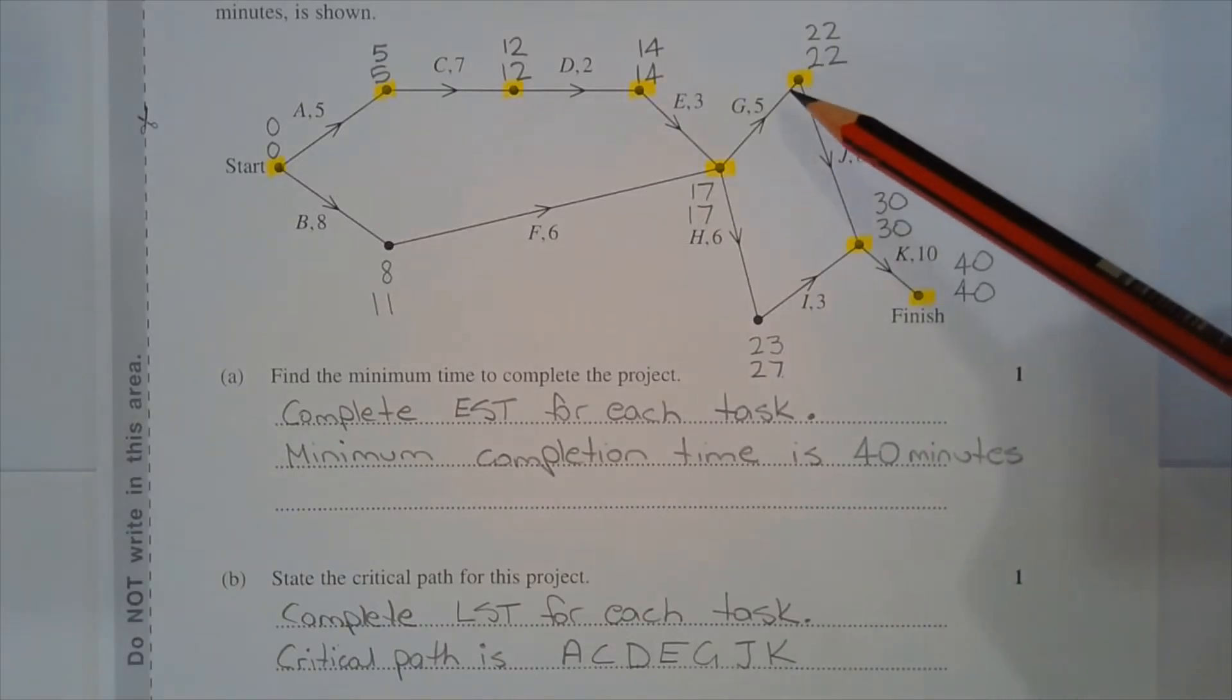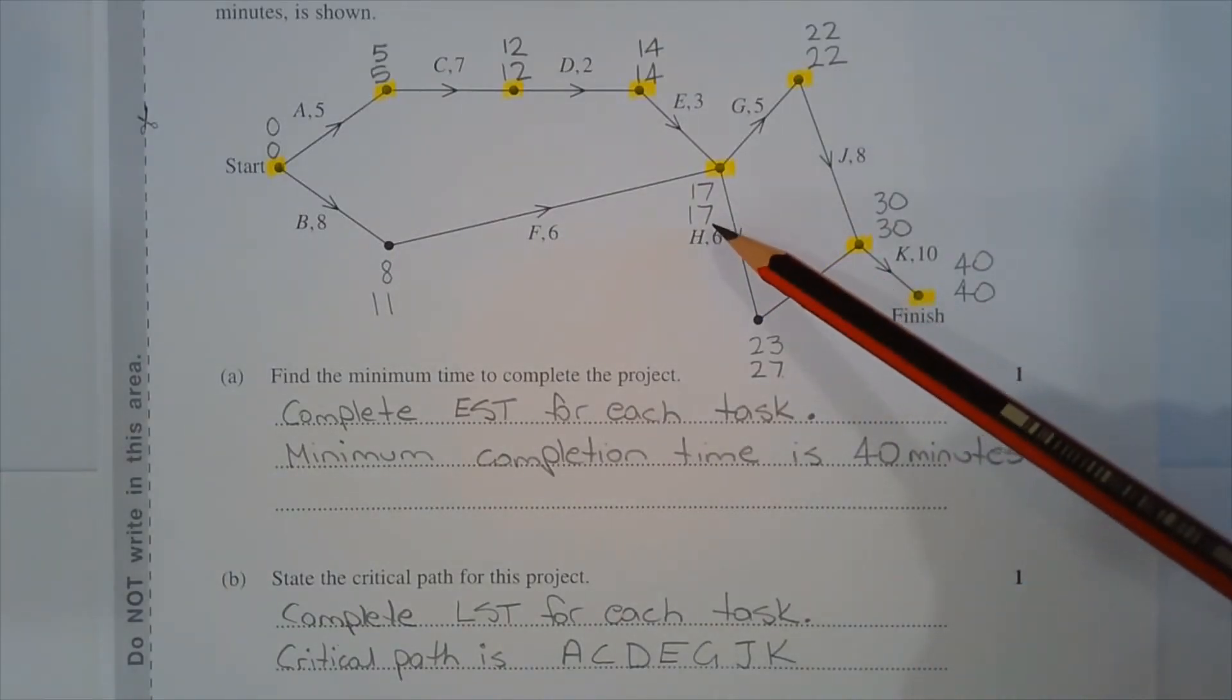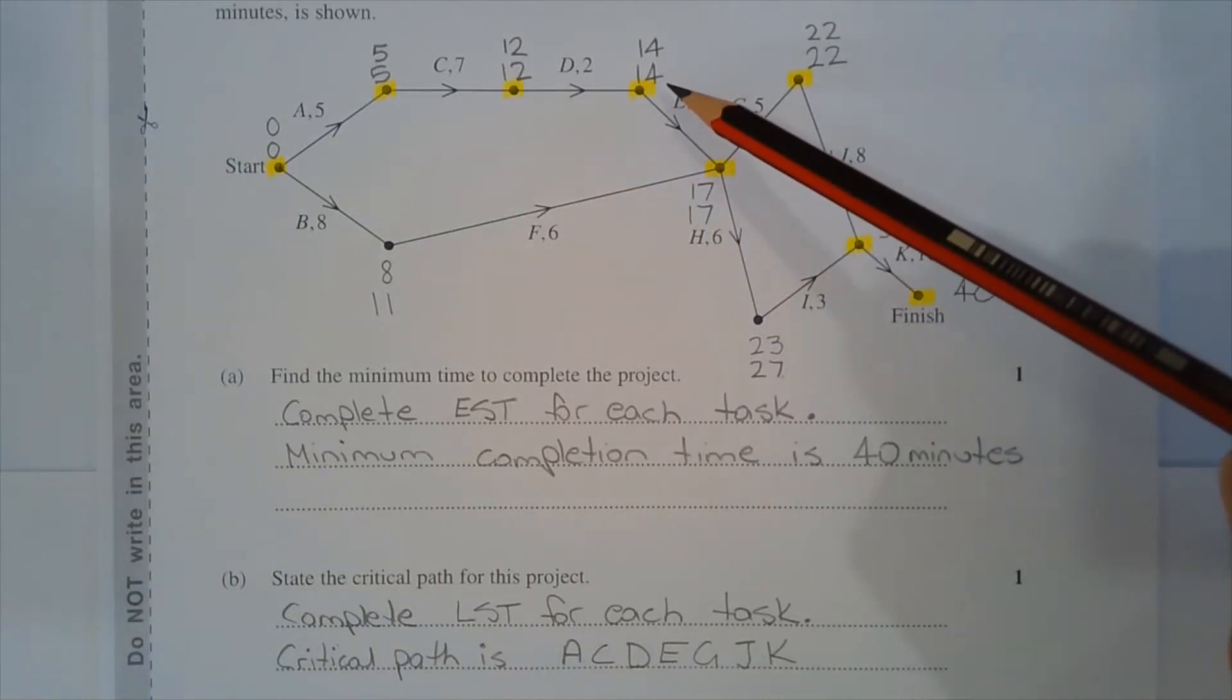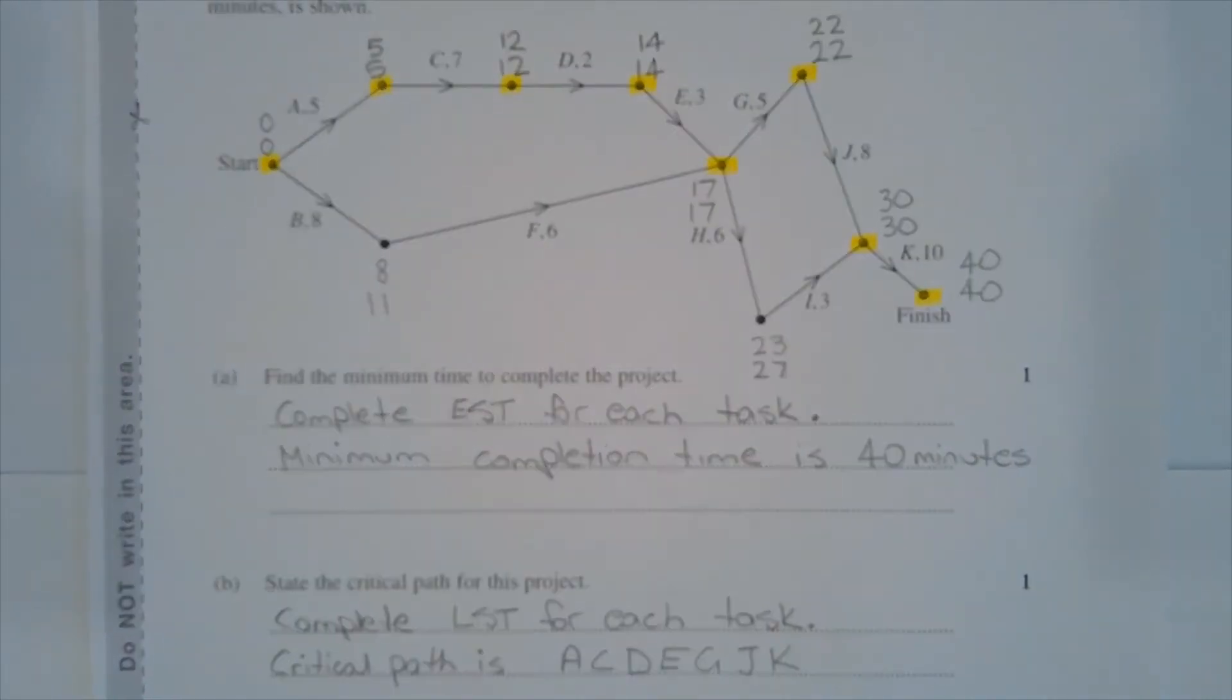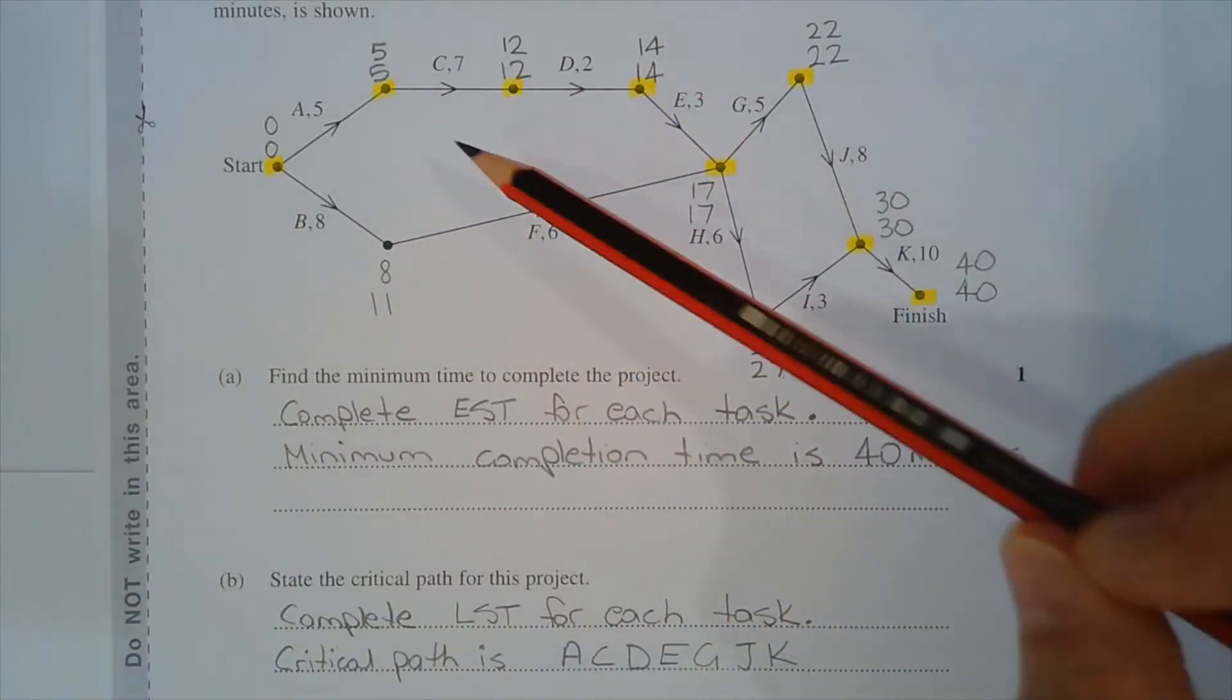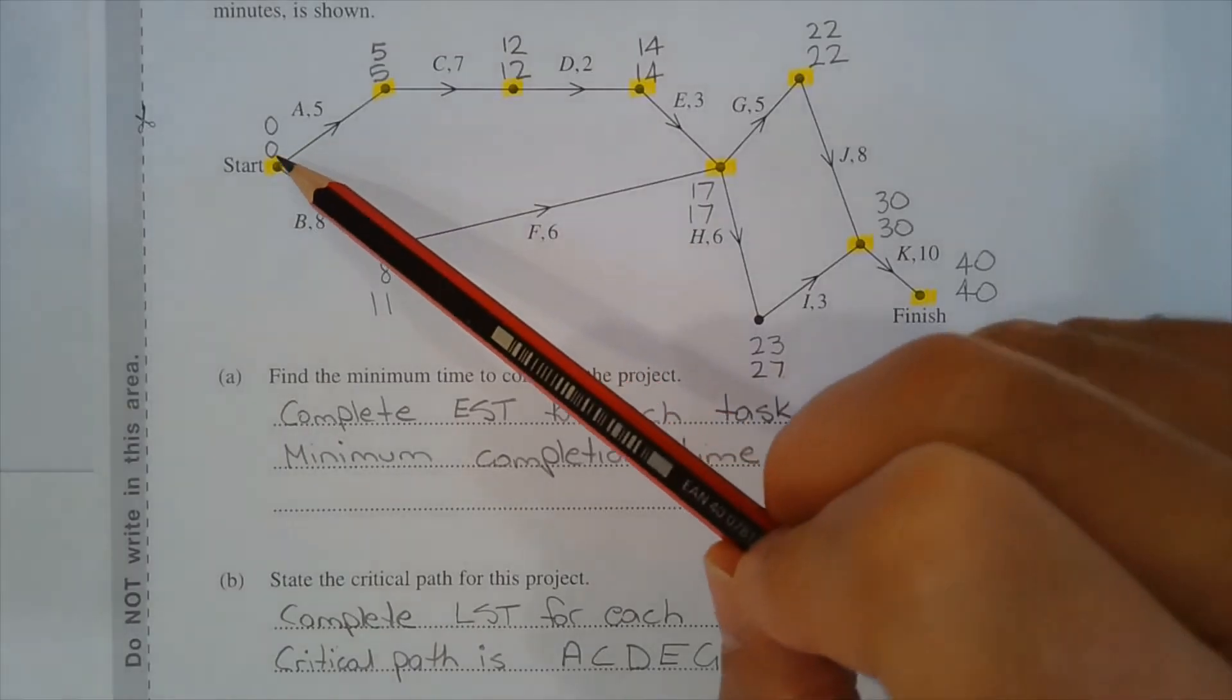22 minus 5 is 17. 27 minus 6 is 21, and the lower of the two numbers is 17. 17 minus 6 is 11. 17 minus 3 is 14. 14 minus 2 is 12. 12 minus 7 is 5, and 5 minus 5 is 0. The critical path is found by locating the vertices where the numbers top and bottom are identical. I've highlighted them here.